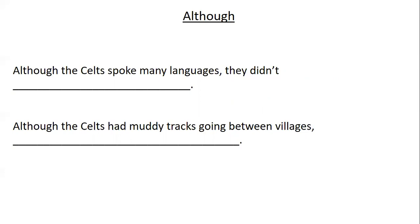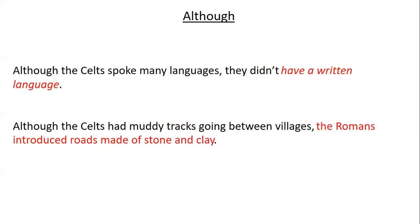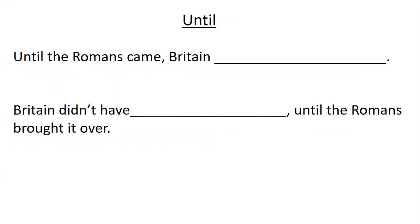Here are some examples. Although the Celts spoke many languages, they didn't have a written language — no sort of alphabet or writing, which the Romans did bring us. And although the Celts had muddy tracks going between villages, the Romans introduced roads made of stone and clay — proper, hard-wearing roads you could drive carts and chariots along, whereas the Celts just had those muddy tracks.